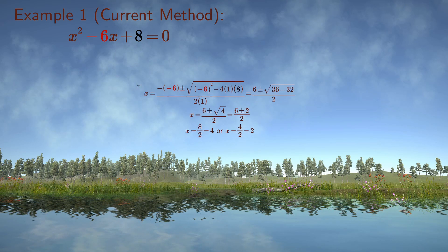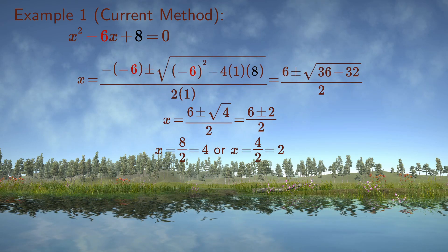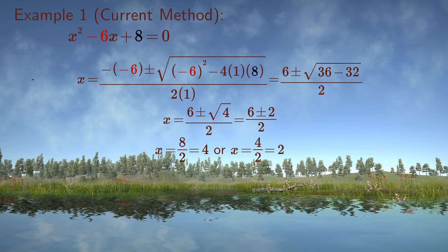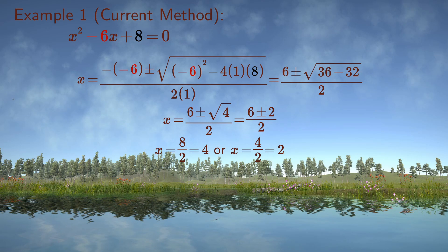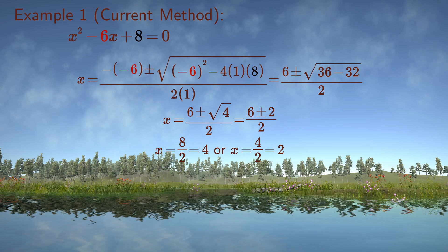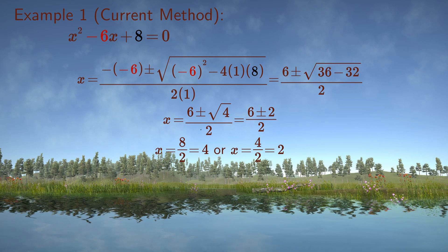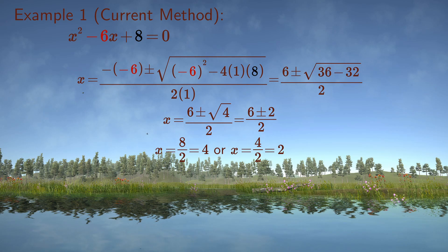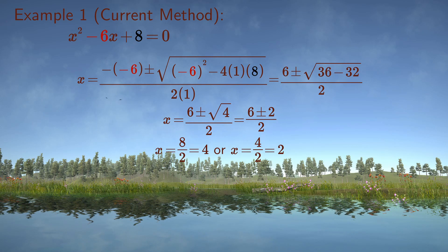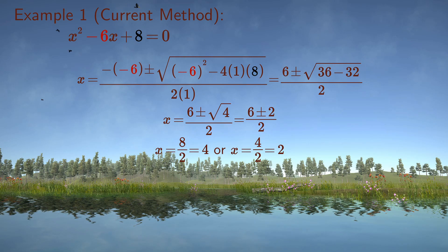If we apply the familiar formula we get x equals minus minus 6 plus or minus the square root of minus 6 squared minus 4 times 1 times 8, everything divided by 2 times 1. We rewrite this as 6 plus or minus the square root of 4 divided by 2, and consequently 6 plus or minus 2 divided by 2.